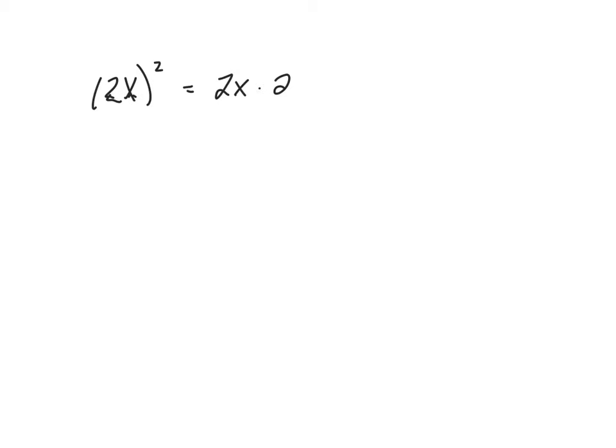Before we move on to the next page, I want to review a few things first. You don't have to write this down if you don't want to, but I would definitely suggest taking out a piece of paper if you need to. So go ahead and pause the video. I want to review things like this: 2x squared. What does that mean? That means 2x times 2x, which means we multiply the coefficients 2 times 2, which gives us 4. Then we multiply x times x, which gives us x squared.